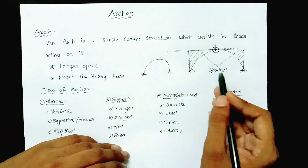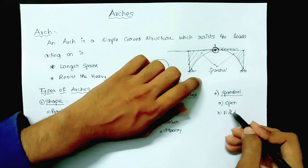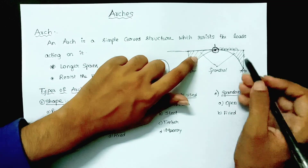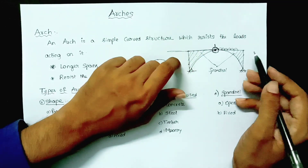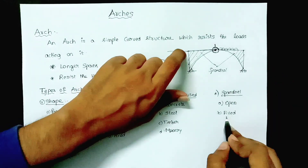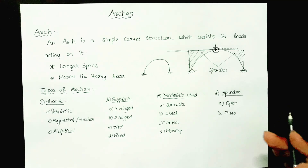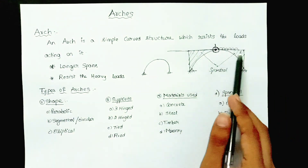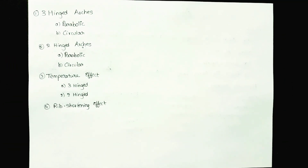The spandrel may be either open or filled. Open means no material is filled in those areas. Filled means some material is used to fill those areas — the space between the arch and the path is filled with earth, soil, concrete, masonry (stone masonry, brick masonry, or any other material). These are the main classifications of arches.